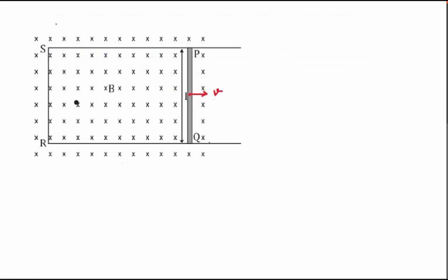So in the first case this is the region of magnetic field and magnetic field is B, it is inwards inside the screen and here this rod or the conductor is moving with a velocity v.